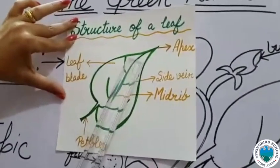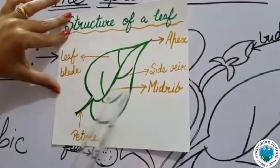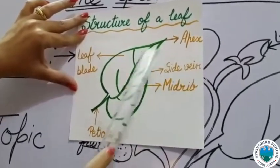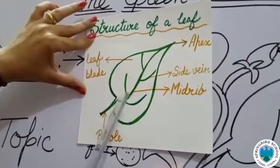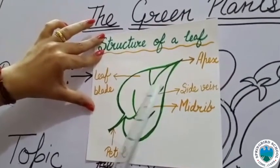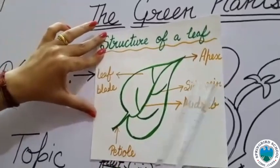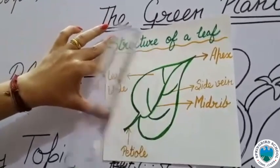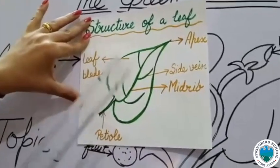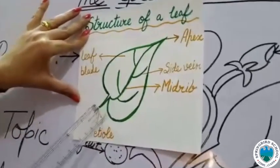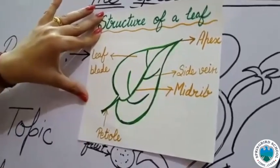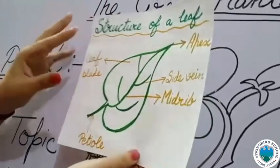The midrib is divided into many veins called side veins. The function of these veins is to provide water and minerals to the leaves to help them make their food.